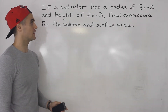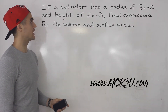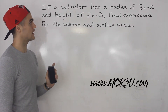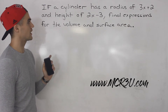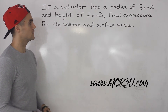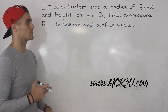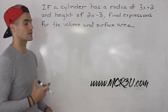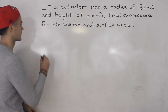What's up guys? Patrick here. In this video we're told that a cylinder has a radius of 3x plus 2 and a height of 2x minus 3. We've got to find expressions for the volume and the surface area of the cylinder.